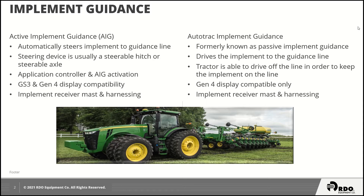The other type is called auto track implement guidance, formerly known as passive implement guidance. This is where the implement is driven to the guidance line. That means the tractor pulling the implement can drive off the line if it needs to in order to keep that implement centered on the line. This form of implement guidance is only compatible with the Gen 4 displays, and again, just like active implement guidance, we do require an implement receiver mast and any necessary harnessing.